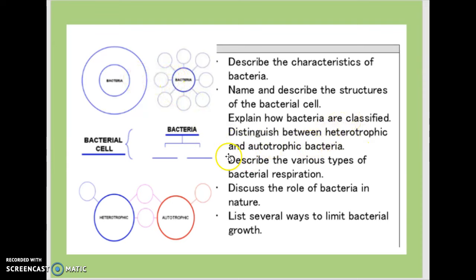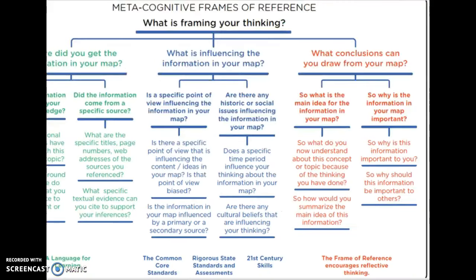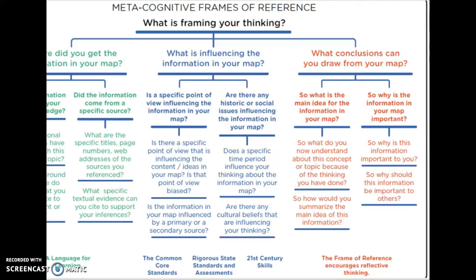I want to go back to yesterday — I showed you all this frame. The green is where they're getting the information. The blue is mapping that information, why we're doing what we're doing. And the red is the upper DOK — where we have the kids asking 'so what am I learning, and so why am I learning it? Who cares?' We're going to talk about that at the end too.